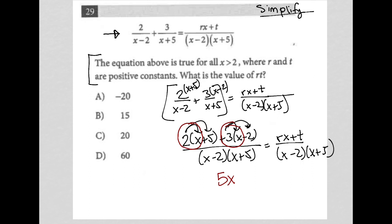And then I have a 10, 2 times 5 is 10. And I have 3 times negative 2, which is negative 6. 10 minus 6 is 4, so this becomes a positive 4. And there's my new numerator.